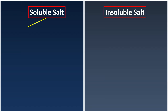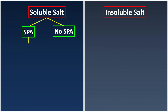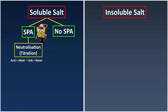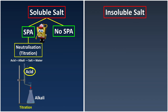First, we're going to see whether the salt contains SPAR or it does not contain SPAR. If it contains SPAR, we're going to carry out the process of neutralization by the method of titration. I remember this by using SpongeBob SquarePants — SpongeBob SquarePants tells us that if the salt contains SPAR, which is sodium, potassium, and ammonium, then we carry out neutralization by using titration.